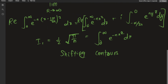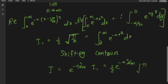Our original integral I was just e to the negative alpha squared over 4n times I1, which turns out to be e to the negative alpha squared over 4n times one half times square root of pi over n. That's precisely the answer we had with the other method — the Feynman technique or Leibniz rule.